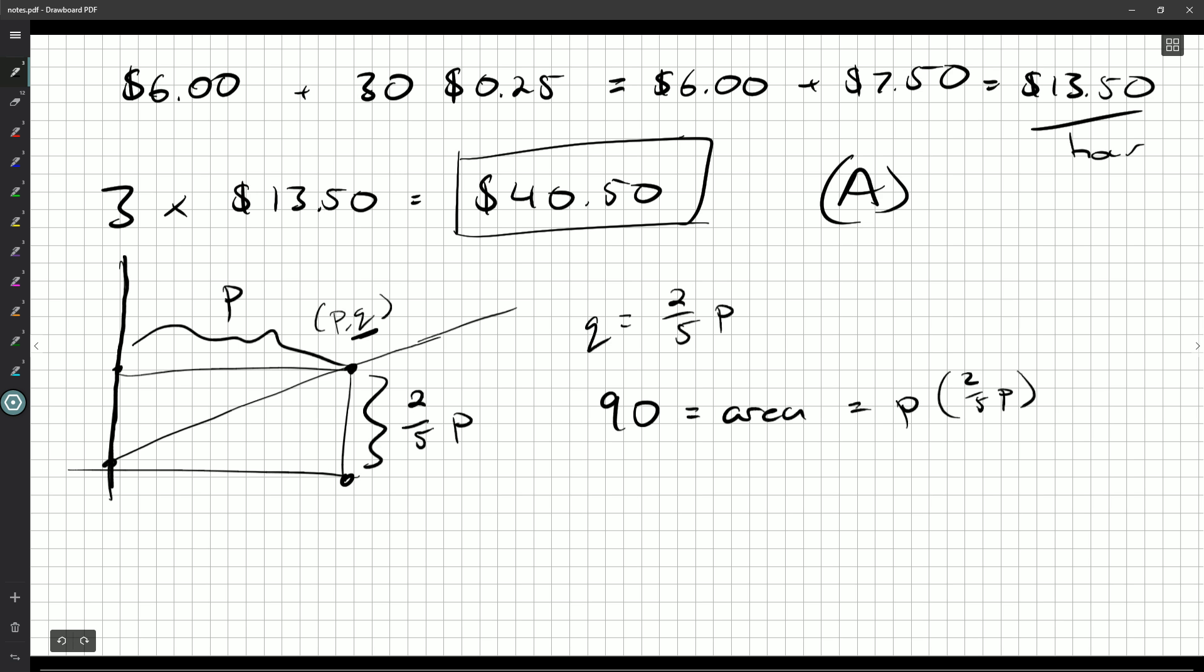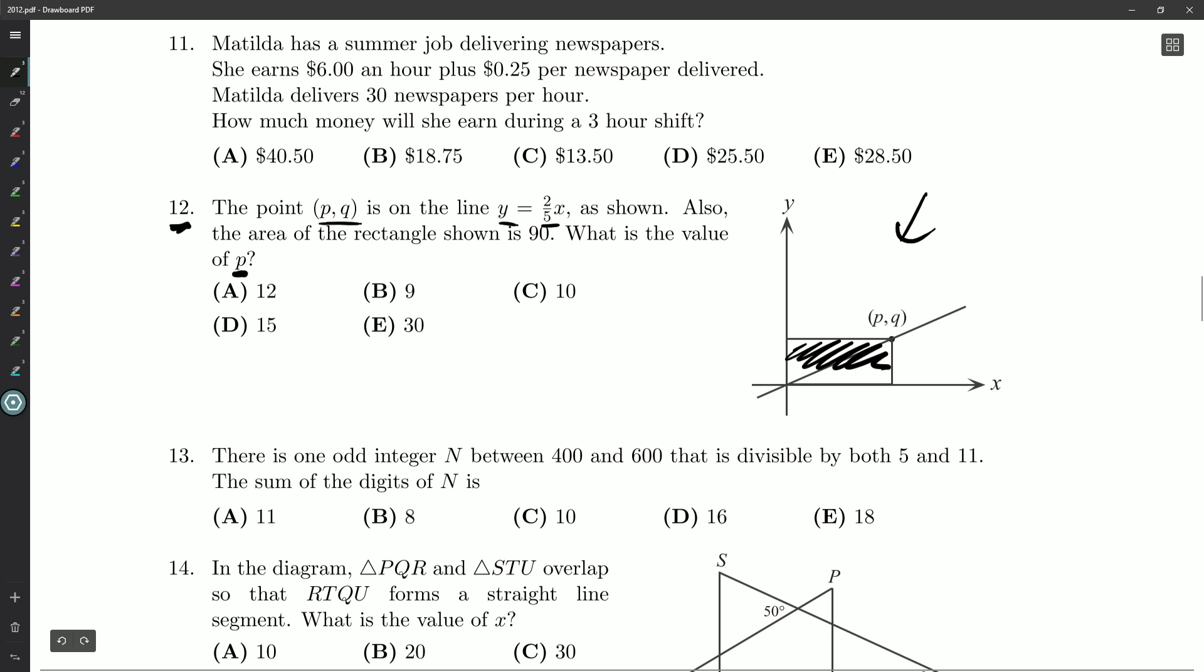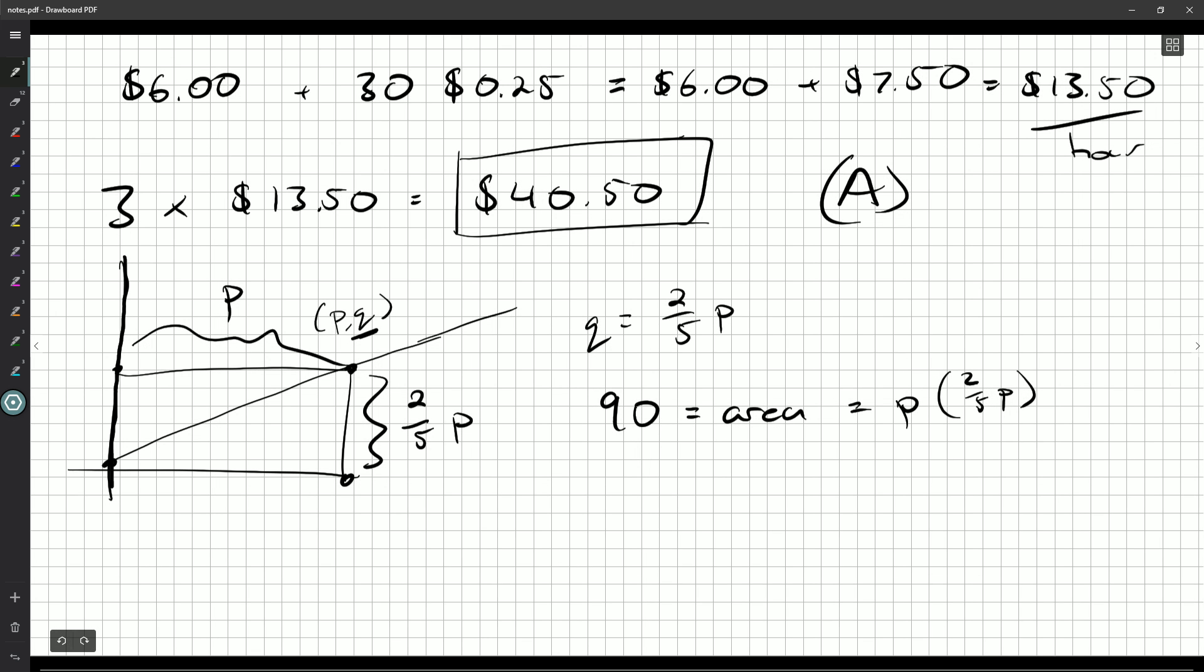And the reason we're putting everything in terms of P rather than Q is because they're asking me what's the value of P. If it asked for Q, we would have written this as Q and we would have rearranged this expression to make this 5/2 times Q. So here we go. We got 90 is 2/5 P².